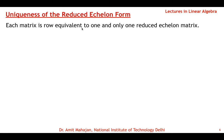An important result is the uniqueness of the reduced equivalent form. Each matrix is row equivalent to one and only one reduced equivalent form. Whatever elementary row operations you apply, in any order, you will always end up with the same unique reduced equivalent matrix satisfying all five properties. The equivalent form satisfying only three conditions may not be unique, but the reduced equivalent form is always unique.